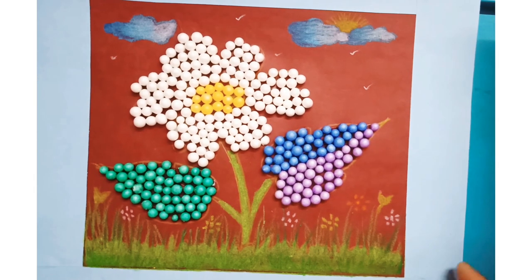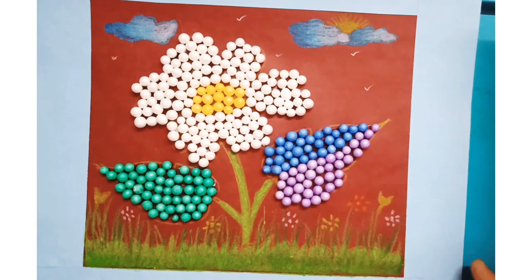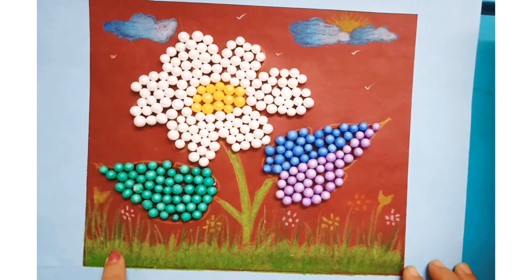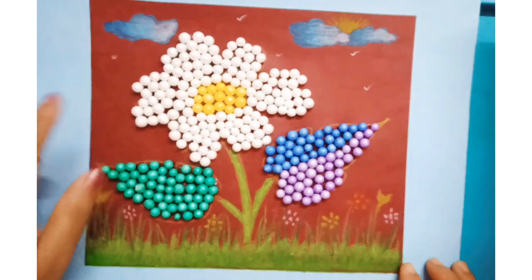After sticking the confetti, your picture will look like this and you can color some grass, clouds, sun, and birds.